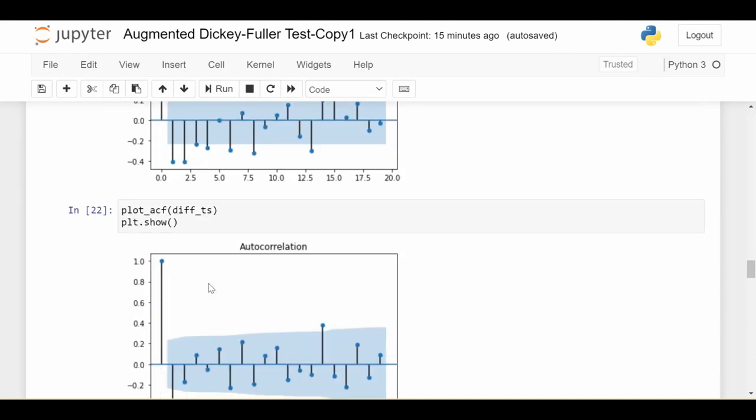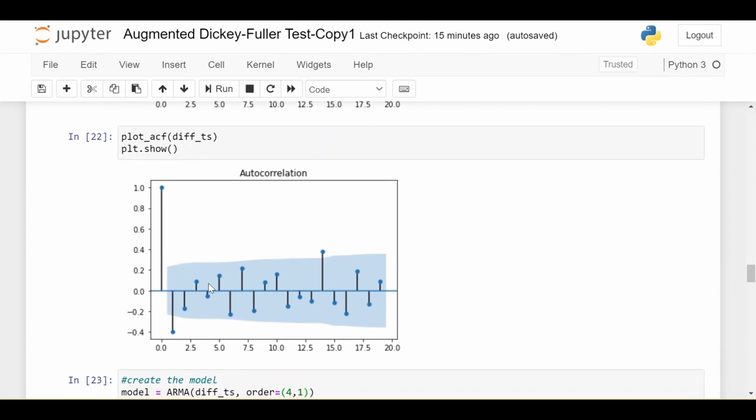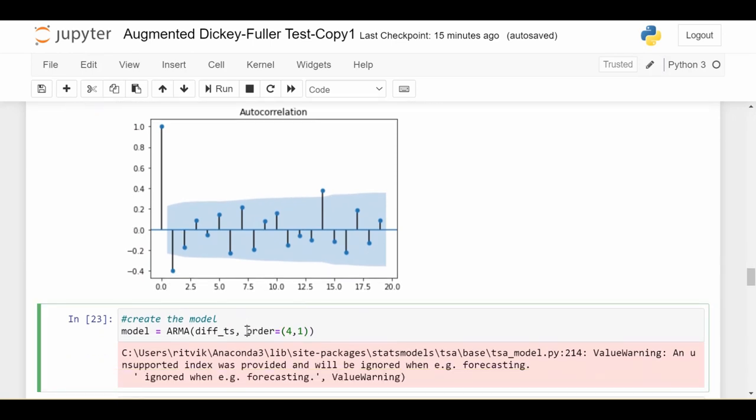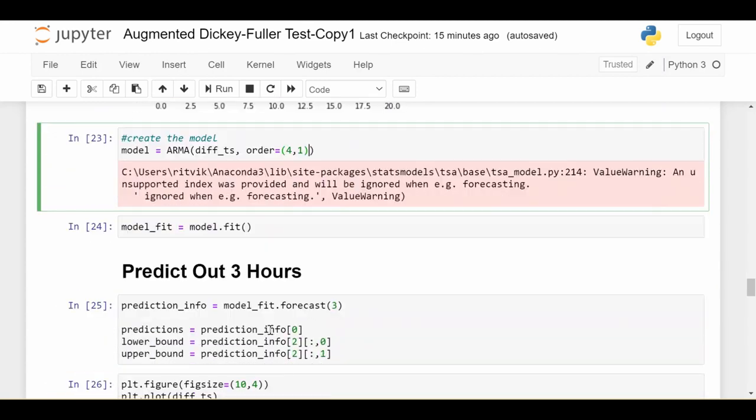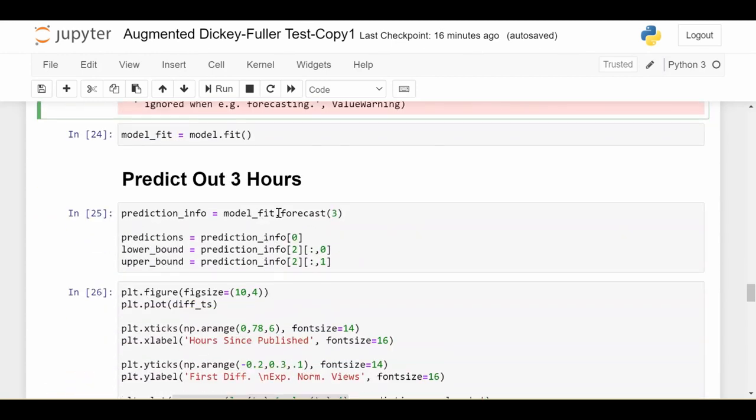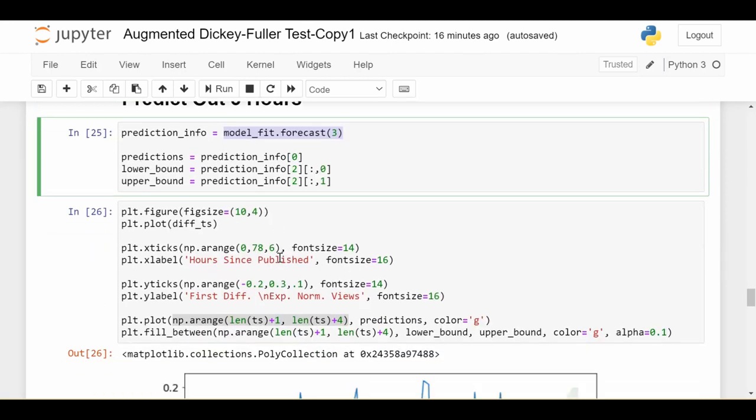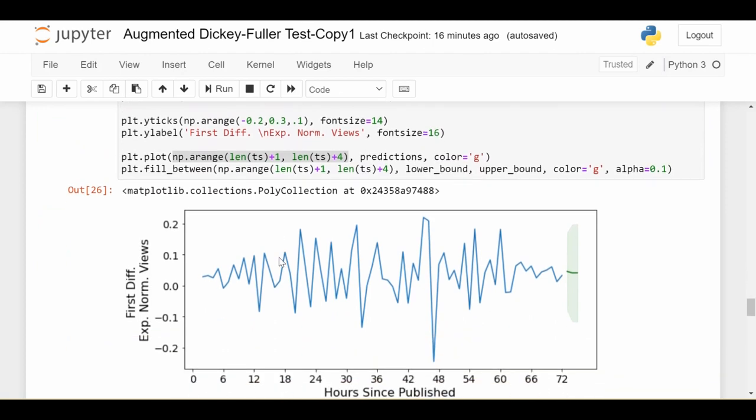We check the ACF to inform us about the order of the moving average, and maybe 1 lag is sufficient. I'm going to start with an ARMA(4,1) model. I create that model, fit it, and then predict 3 hours forward. I get the predictions here and plot them.